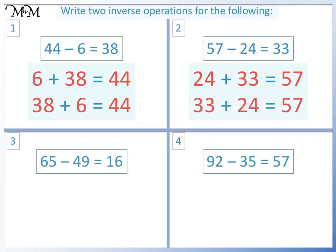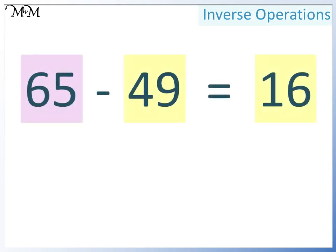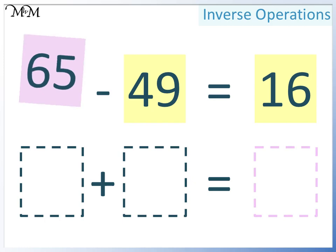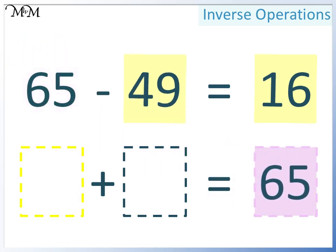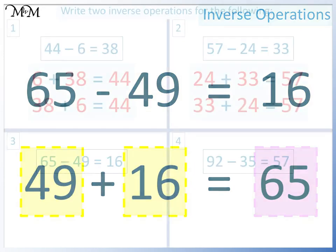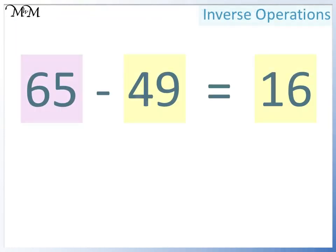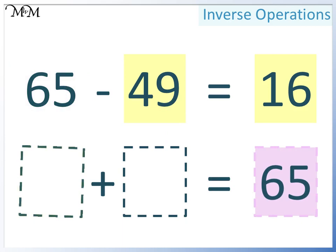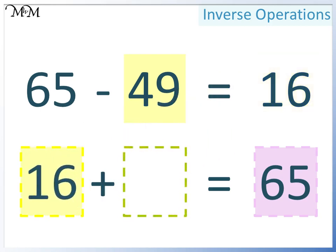Question 3: 65 take away 49 equals 16. To write this as an addition, we must have the largest number here. In this space we can have either of the two smaller numbers; we'll write 49 here, and so in this space we must have 16. 49 plus 16 equals 65. Again, the largest number must go here. Either of the two smaller numbers can go here; this time we'll have 16, and so 49 must go here. 16 add 49 equals 65.